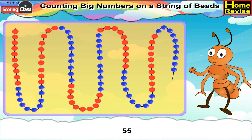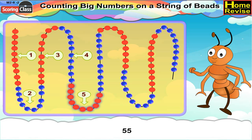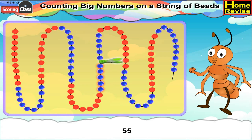55. For 55, first we will take 10 red beads, followed by 10 blue beads. Then again 10 red beads, followed by 10 blue beads. And then followed by 10 red beads. Now, count 5 more blue beads. Place the clip after 5 more blue beads. And you have number 55.